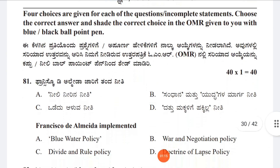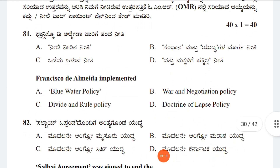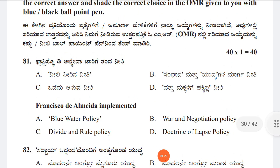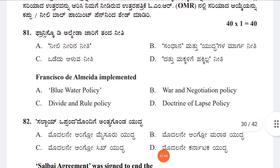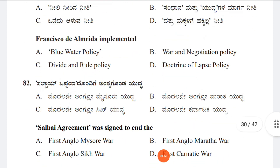The first question is: which policy was implemented by Francisco de Almeida? Option A: Blue Water Policy, Option B: War and Negotiation Policy, Option C: Divide and Rule Policy, Option D: Doctrine of Lapse Policy. The answer is Option A, Blue Water Policy.